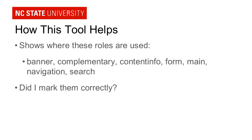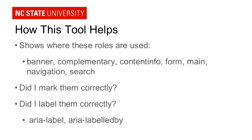This is nice because it'll actually show you did you mark them correctly. Is the main area defined as you really meant the main area to be, or is the navigation really defined the way you meant it to be. The tool will also show you if you labeled the landmark and if you did, did you do it correctly — whether you used the ARIA label or the ARIA labeled by attribute.